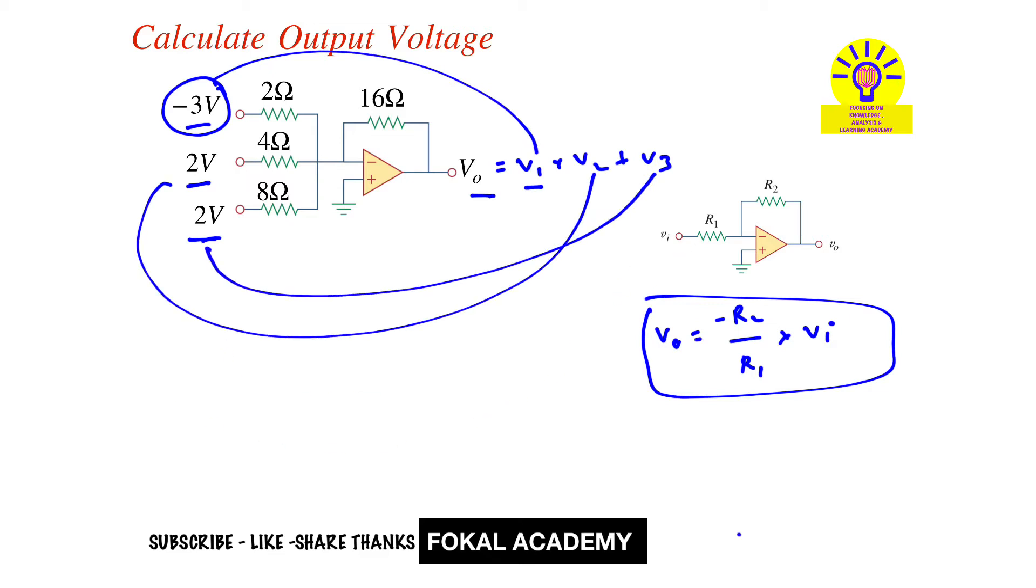By using this formula we find V1, V2, V3. V1 equals—here R2 is the feedback resistance, common to all sources—minus 16 divided by 2 ohms into minus 3 volts, plus minus 16 by 4 into 2 volts, plus minus 16 divided by 8 ohms into 2 volts.